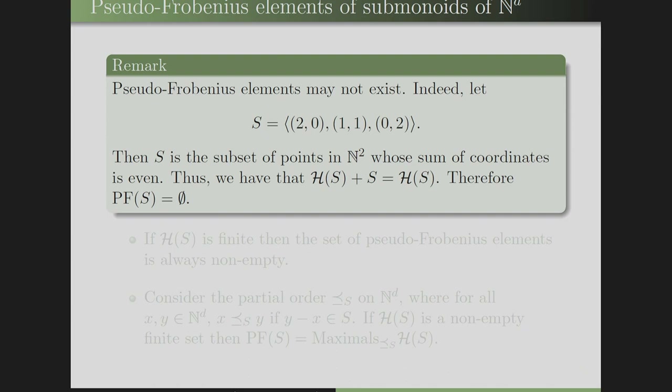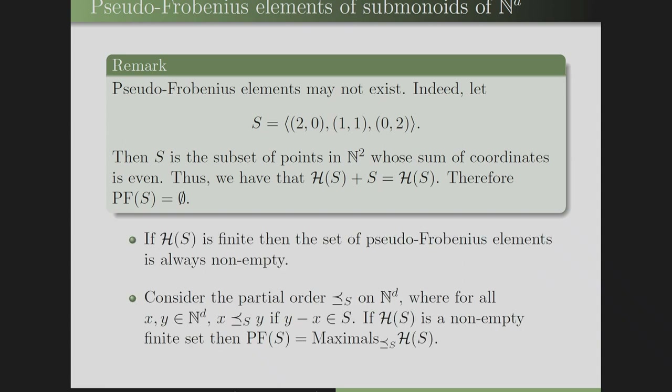Remark: pseudo-Frobenius elements may not exist. For example, let S be the semi-group generated by (2,0), (1,1), (0,2). Then S is the subset of points in N^2 whose sum of coordinates is even. It means H(S) is the subset of points in N^2 whose sum of coordinates is odd, and if we add an element of S to H(S), we land back in H(S). Therefore PF(S) is empty. But when H(S) is finite and non-empty, PF(S) is always non-empty.